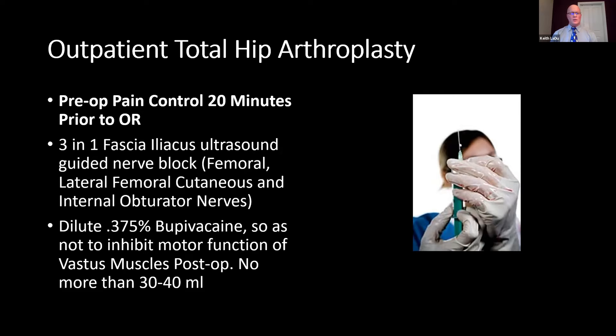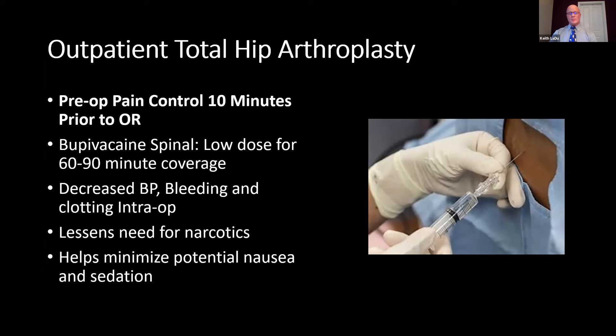Twenty minutes prior to entering the OR, anesthesia performs a 3-in-1 fascia iliacus ultrasound-guided nerve block that blocks the femoral, lateral femoral cutaneous, and internal obturator nerves. They typically use a dilute 0.375% bupivacaine so as not to inhibit motor function of the vastus muscles postoperatively, and no more than 30 to 40 cc's of bupivacaine is used. Ten minutes prior to entering the OR, a low-dose bupivacaine spinal is performed that typically lasts 60 to 90 minutes. The benefits include keeping blood pressure decreased, helping with bleeding, and helping with clotting intraoperatively.